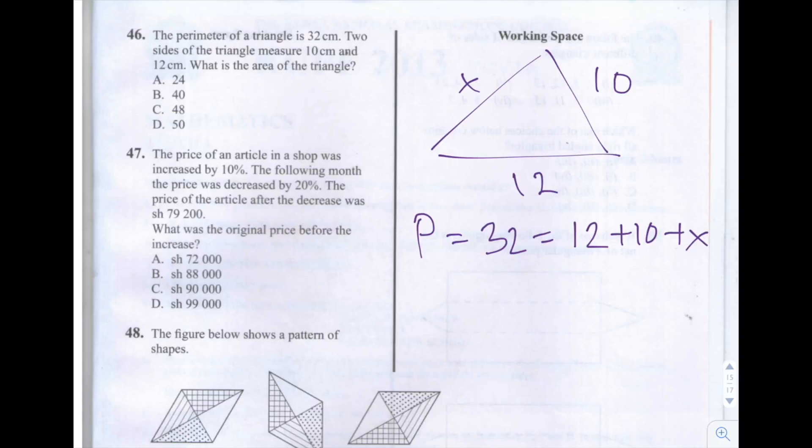So we're told the perimeter, which is the length the whole way round the triangle, which I've highlighted here in purple, is 32 centimeters. I've represented the perimeter as P, and I said P equals 32.